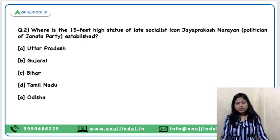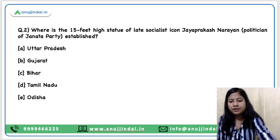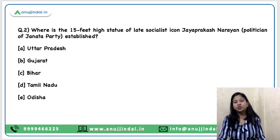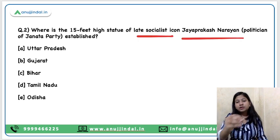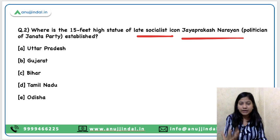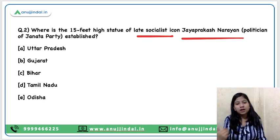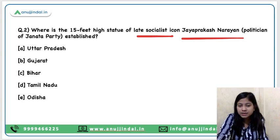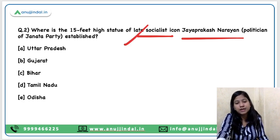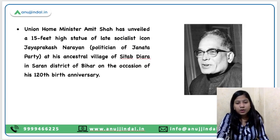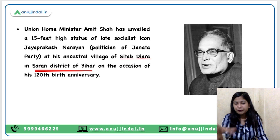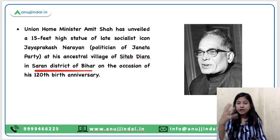Question number 2: A 15-feet-high statue of Jay Prakash Narayan, who was the late socialist icon and a party member of Janata Party, has been established. Where is his statue established? His statue has been established in Bihar at his birthplace. In the Saran district of Bihar, his 15-feet-tall statue has been inaugurated by Union Home Minister Amit Shah.